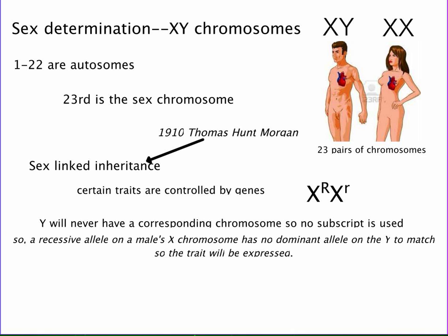We need to understand sex determination — those XY chromosomes. In humans, we have 23 pairs of chromosomes. The first 22, chromosomes 1 through 22, are called autosomes, and the 23rd is called a sex chromosome. Men have XY and women have XX. Women can only contribute an X to the next generation, while the man controls the sex because he has a Y. In 1910, Thomas Hunt Morgan discovered sex-linked inheritance, and you're going to do a journal on his experiments this week.